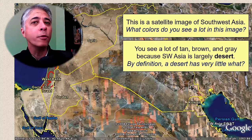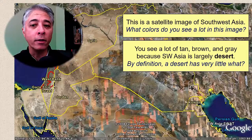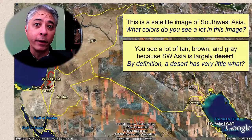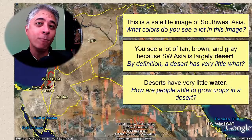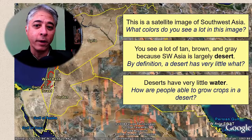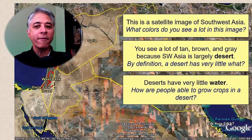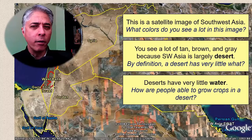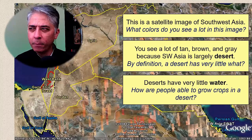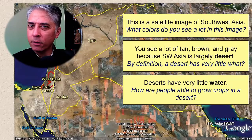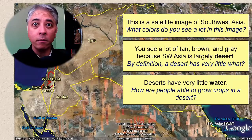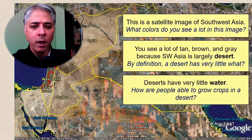And of course, by definition, a desert has very little water. That's right — deserts have very little water. So we know that one of the things that people need to survive is food.